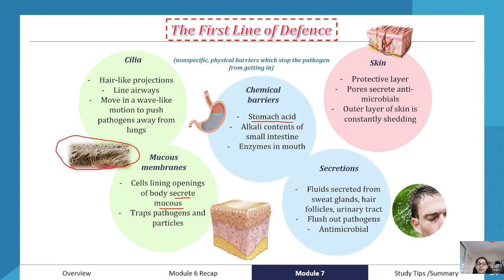We also have secretions — fluids secreted from the body including sweat glands, hair follicles, and the urinary tract. What they do is aim to flush out pathogens, and they are also antimicrobial.